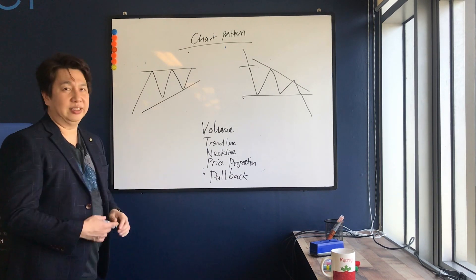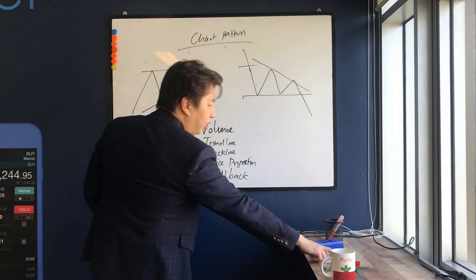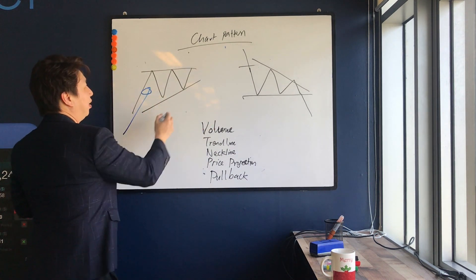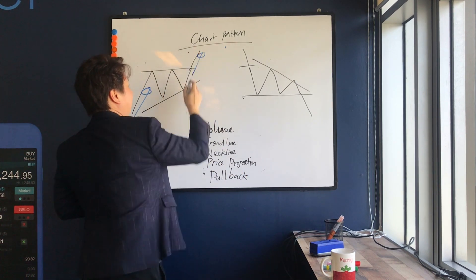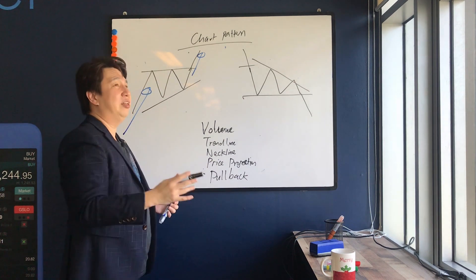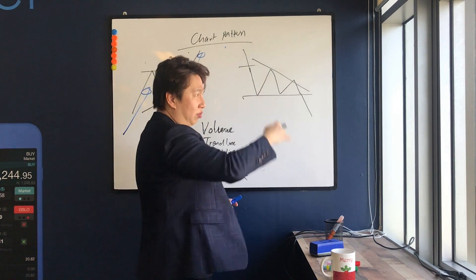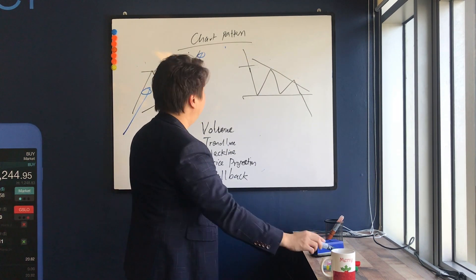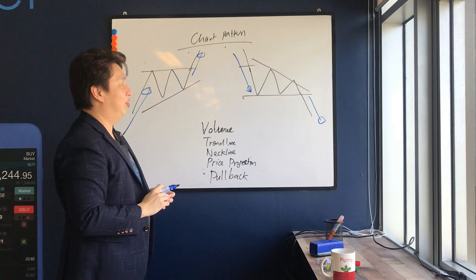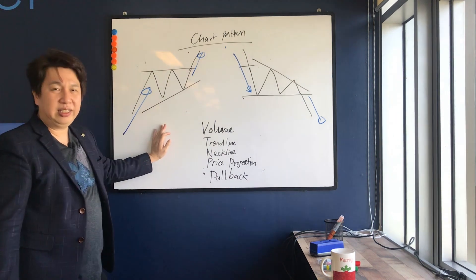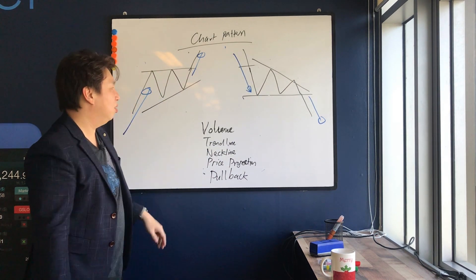Let's talk about continuation patterns — we talk about triangles. Here we have ascending triangles where the price is going up, and the prior trend is actually up, then after the pattern it continues going up further. The first thing you must identify is the prior trend. In a reversal it's opposite — goes down then goes up. In a continuation descending triangle, the prior trend is coming down and it continues going down further.